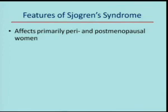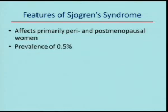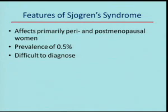Sjogren's syndrome strikingly affects perimenopausal and postmenopausal women, with a female-to-male ratio well over 10 to 1 and sometimes reaching 20 to 1. Unlike rheumatoid arthritis, it does not affect women in the reproductive age years but primarily after menopause. Epidemiologic studies have suggested a prevalence of 0.5%, which would make it one of the more common systemic autoimmune diseases, but I believe this number is too high and the disease is less prevalent than suggested. It is difficult to diagnose, requiring multiple specialists — an ophthalmologist, oral surgeon, and good pathologist — working together to arrive at the proper diagnosis.